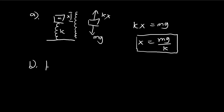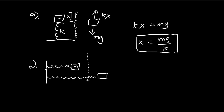For part b, this entire setup is going to get flipped horizontally and then oscillate back and forth. The spring is now compressed, so it's going to push the block outwards — it's going to get pushed out to somewhere over here. We want to find how much it will be pushed out, which we'll call y. If this were simple harmonic motion, y would just equal x. But now we have friction with a coefficient of 1/8, so y is going to be smaller than x because some energy is lost to friction.